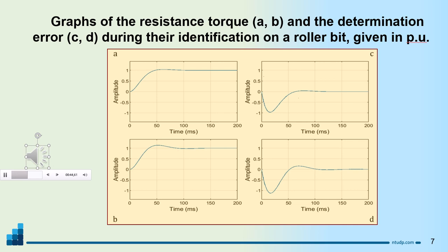Calculated plots of resistance torque identification on the roller cone bit using the astatic observer and the binomial roots distribution and the Butterworth ones distribution, correspondingly. Figures C and D show the calculated graphs of the error in finding the resistance torque by an astatic observer with a binomial distribution of roots and the Butterworth distribution correspondingly. In all graphs, the torque amplitudes are shown in relative units. Torques are reduced to the rated motor torque M equals 580 kg times M.